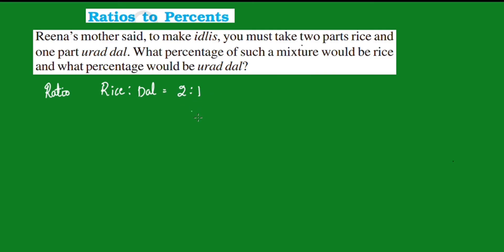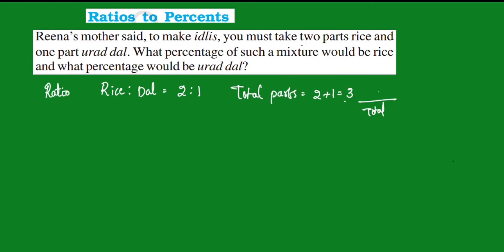Now we need to take 2 parts rice out of the total. How do we write this as a fraction? We write the part in the numerator and the total in the denominator. The total parts are equal to 2 plus 1, which is equal to 3.